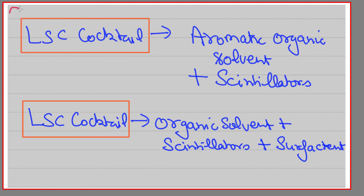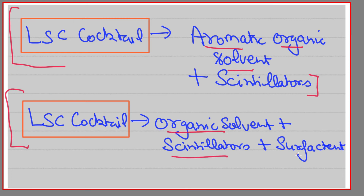The LC cocktail can be of two types. In one type you have aromatic organic solvent plus scintillators. In another type you have organic solvent, scintillators, and a surfactant. The surfactant works as an emulsifying agent, and this cocktail is used for aqueous samples, while the first type is used for organic samples.